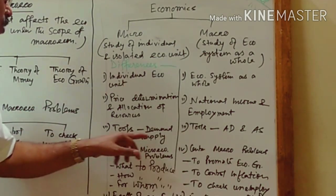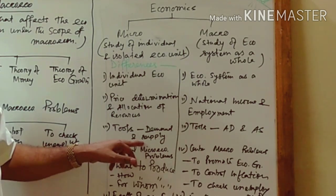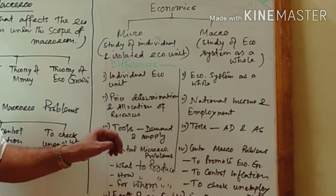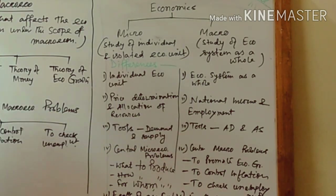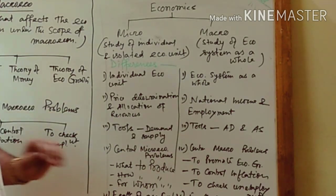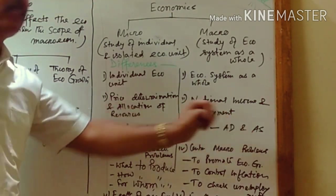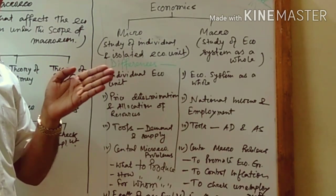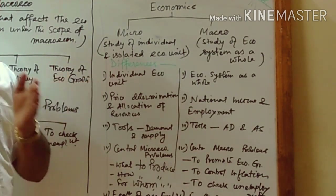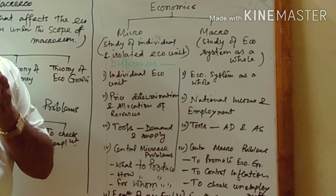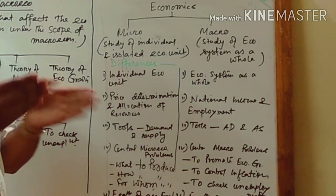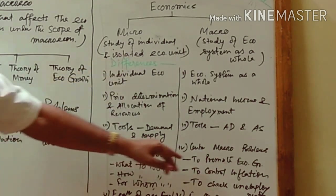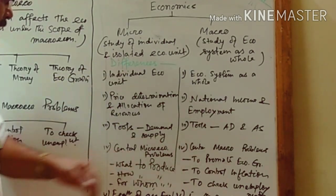The next point of difference is that in microeconomics the tools are simply demand and supply — the two most important tools. Here in macroeconomics the two tools are aggregate demand and aggregate supply. Aggregate means total — aggregate demand means total demand in the economy, and aggregate supply means total supply in the economy.